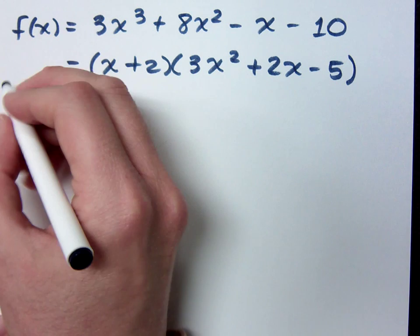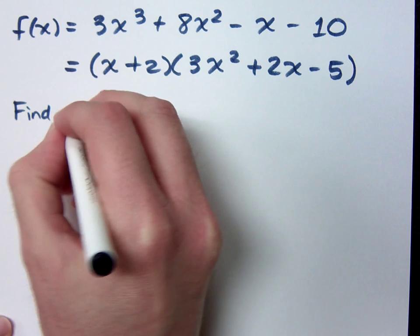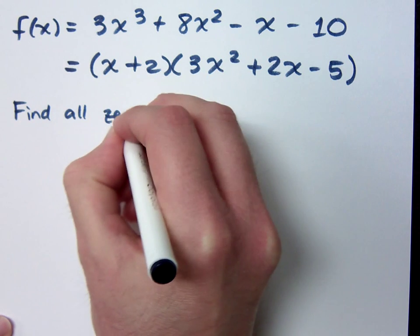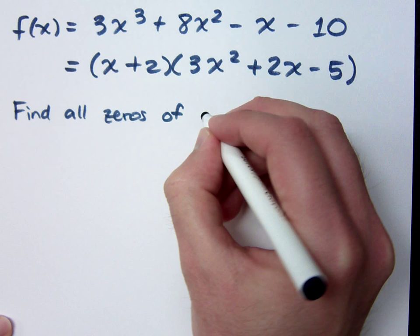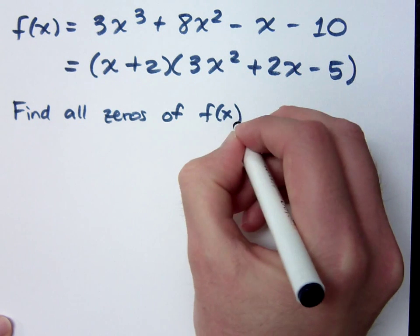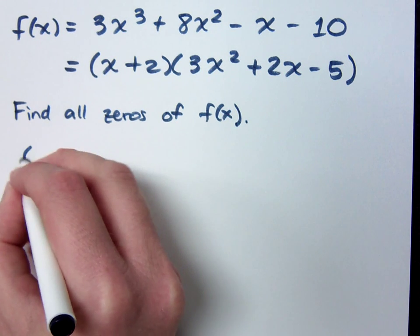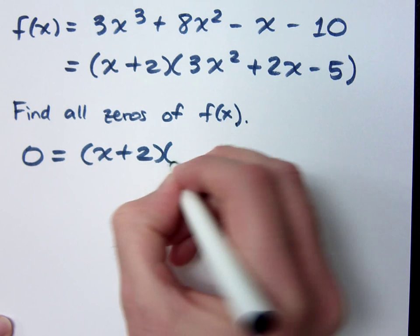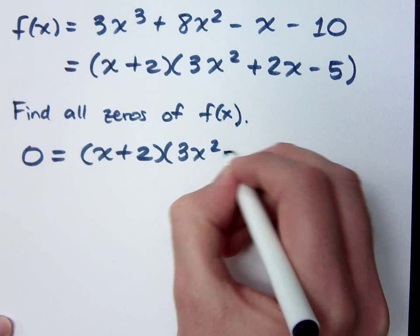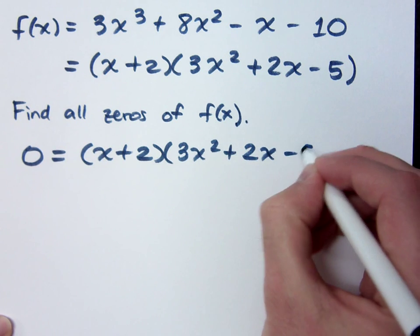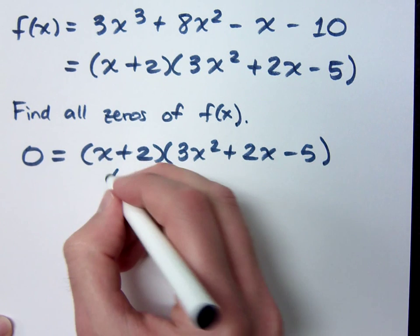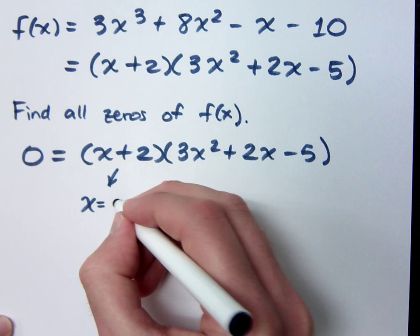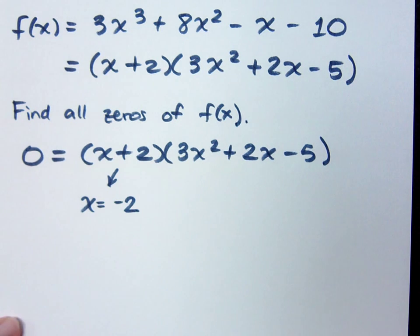Now, if I want to find all zeros of f of x, that means you have to find out everything that makes this equal to zero. So if I look at this, we know already that x equals negative 2 is a zero. We were able to verify that in the other video.